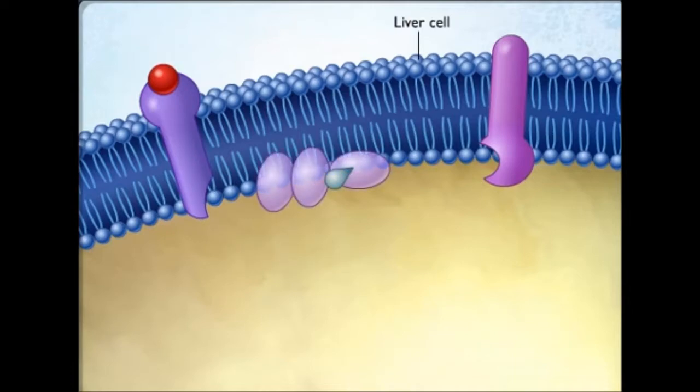When epinephrine binds the beta adrenergic receptors on the liver cell, G-proteins on the inner side of the cell membrane are activated.